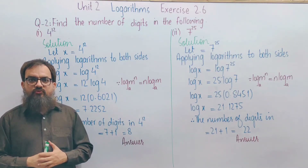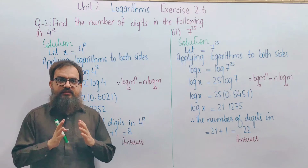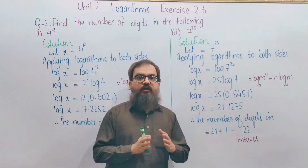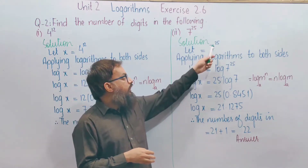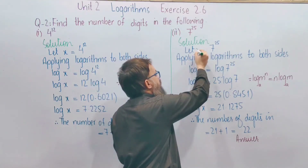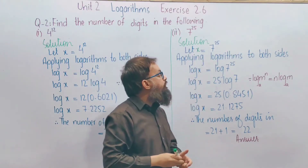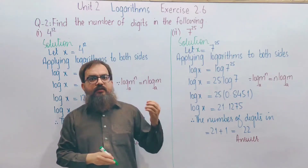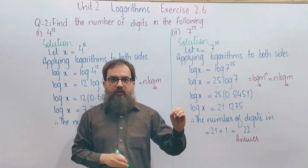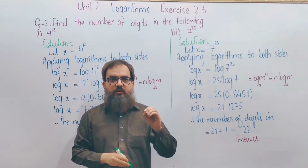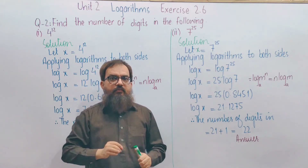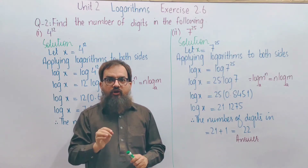7 to the power 25. Following our steps, we assume 7^25 equals X. So we write X here. After that, we further simplify this and apply logarithms to both sides. That step is done.